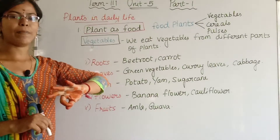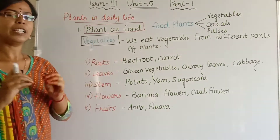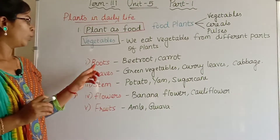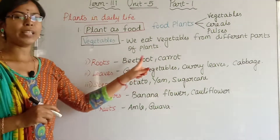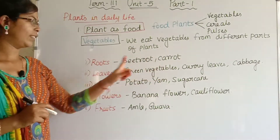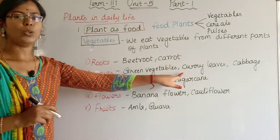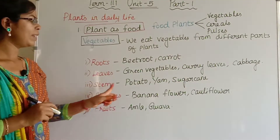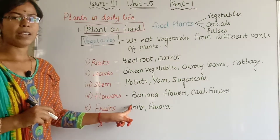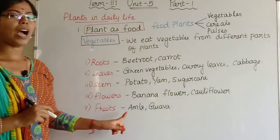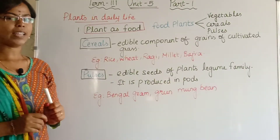Food plants are classified into vegetables, cereals and pulses. We consume different parts of the plant: root, leaves, stem, flower and fruits. Roots include beetroot and carrot. Leaves include green vegetables, curry leaves, kothumali (coriander) and cabbage. Stem includes potato, yam and sugarcane. Flowers include banana flower and cauliflower. Fruits include amla, guava and gooseberry.